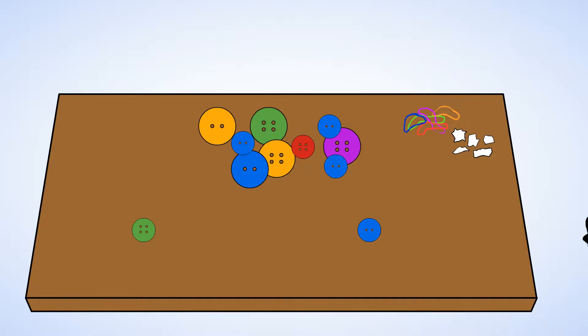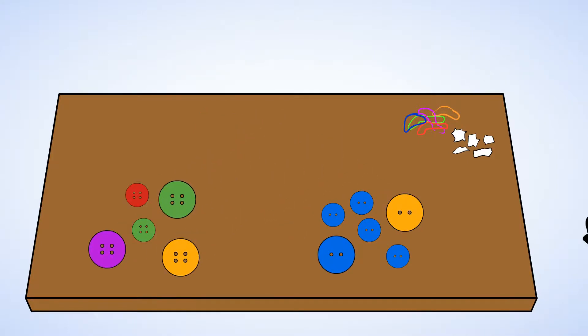Let's see. These buttons all have two holes, so we can put them over here. And these buttons all have four holes, so we could put them in a different pile. And now we've sorted the buttons.